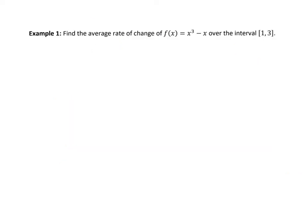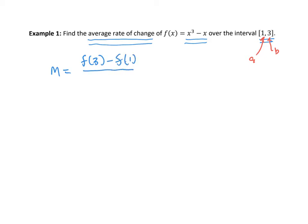In this first example, we are asked to find the average rate of change — remember, the average rate of change has a special meaning — for the function f of x equals x cubed minus x on the interval [1, 3]. So a equals 1 and b equals 3. To compute the average rate of change — I'm calling it m because it's the slope of the secant line — I'm going to do f of 3 minus f of 1 over 3 minus 1.